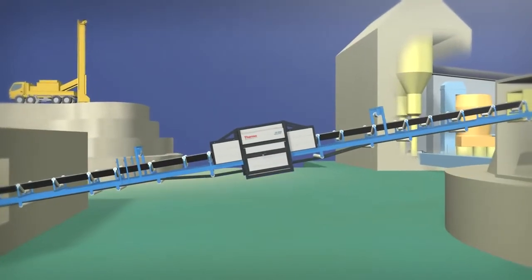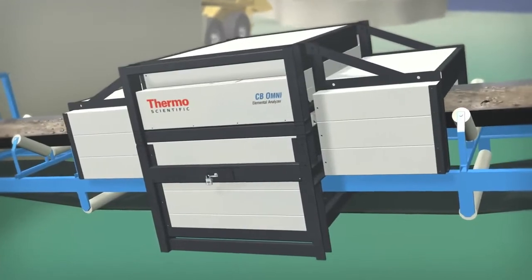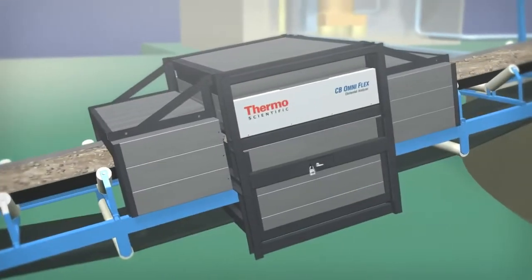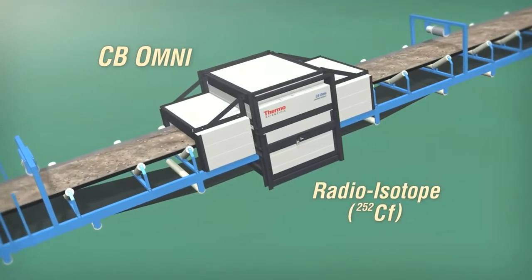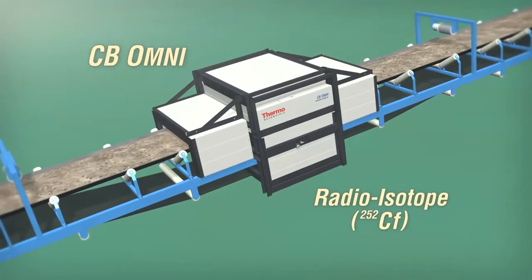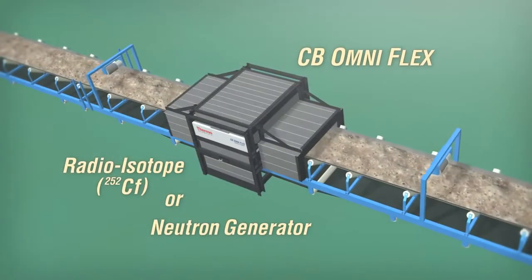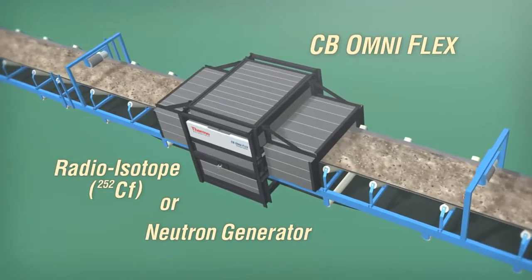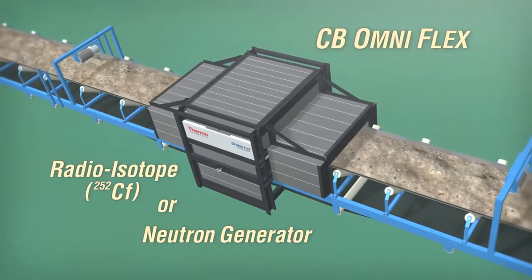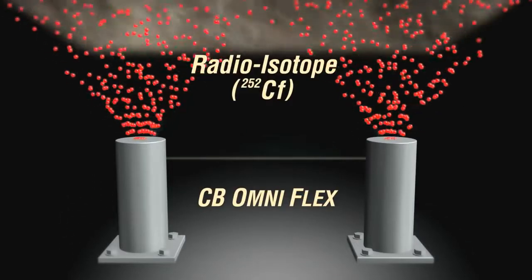Thermo Scientific offers two versions of online analyzer models, the CB Omni and the CB Omni Flex. The CB Omni is designed to use the radioisotope Californium 252 for its source of neutrons. The CB Omni Flex is a uniquely designed system that has the option to use either the radioisotope or a neutron generator for its source of neutrons.